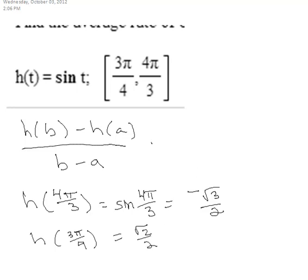Alright, so H of B minus H of A is going to be negative square root of 3 over 2, minus the square root of 2 over 2, all over B minus A.